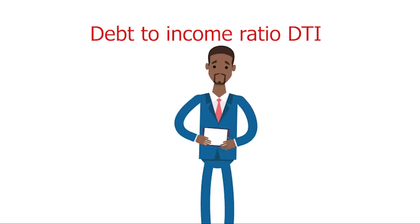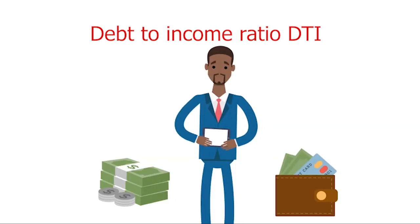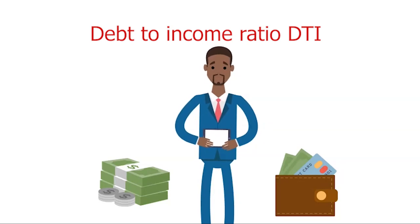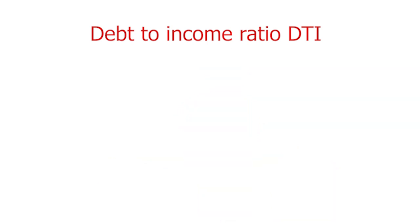Debt-to-Income Ratio, DTI: a calculation of the amount of debt you are paying monthly in relation to your income. For example, if you earn $4,000 monthly and pay $3,800 in monthly debt, your DTI is 3,800 divided by 4,000, which equals 0.95 or 95%. With such a high DTI, no lender will want to loan you money — you will be considered highly risky.